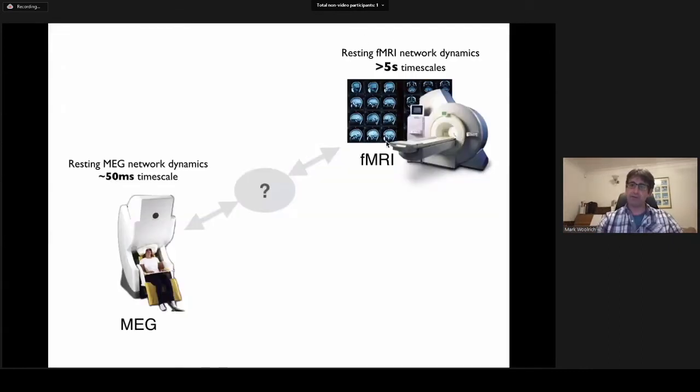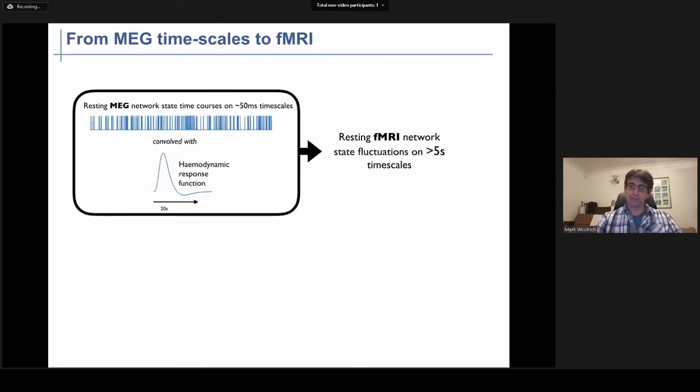So far we've shown that we can access dynamics in these networks on the slow five second timescale with fMRI, and with MEG we can access much faster timescales on the 50, 100 millisecond timescale. But what's the link between these slow and fast timescales? The most obvious link is that the resting MEG network state time courses have within them long range temporal structure, which when you pass that through the low-pass filtering properties of the hemodynamic response function results in meaningful fMRI network state fluctuations on the slow fMRI timescales. So this is a testable idea. We can't do it with simultaneous MEG and fMRI data, but we can get EEG and fMRI data simultaneously. That's technically possible.